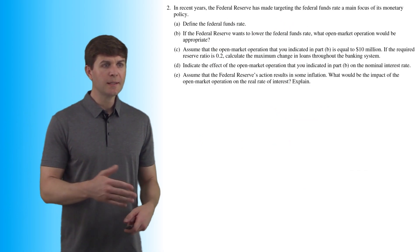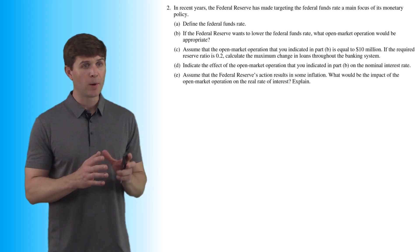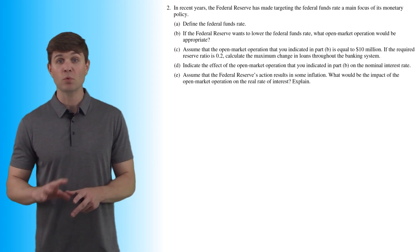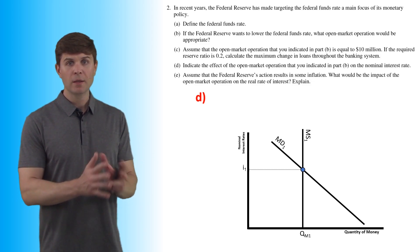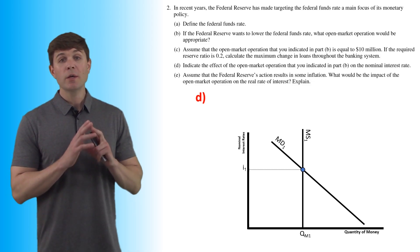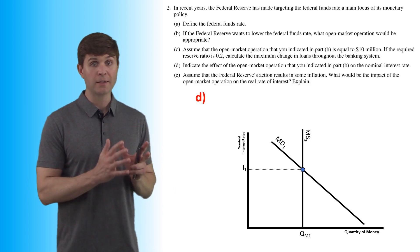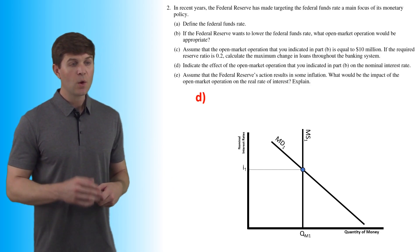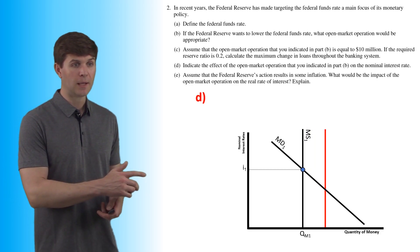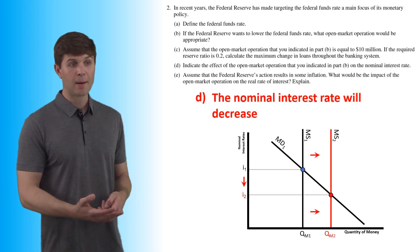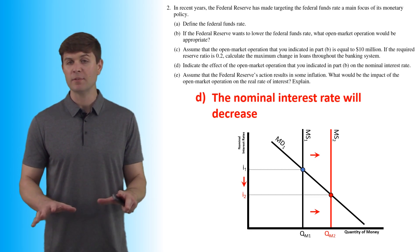Part D asks: indicate the effect of the open market operation from Part B on the nominal interest rate. We're back to buying bonds. Buying bonds is going to increase the money supply, and we're going to see a drop in the nominal interest rate. So the nominal interest rate would decrease. That's it for Part D.